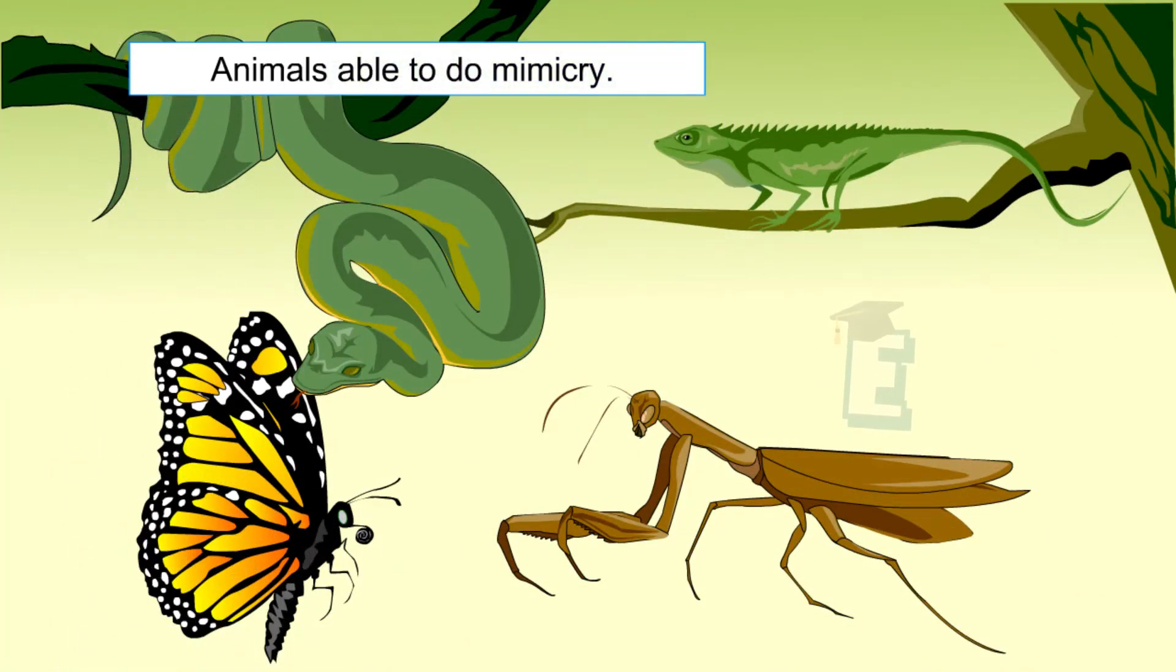In addition to the chameleon and grasshopper, other organisms such as butterfly, snake, lizard, and some fish species also do mimicry.